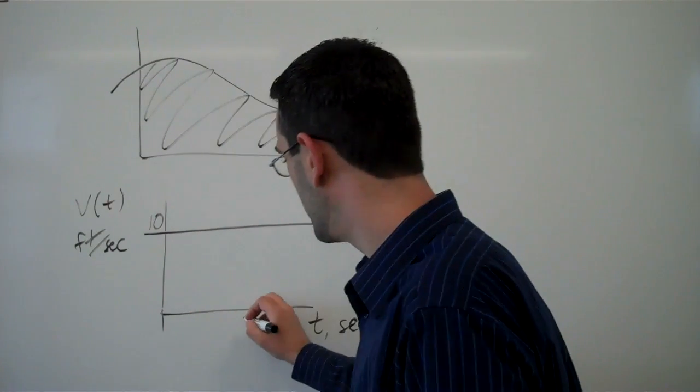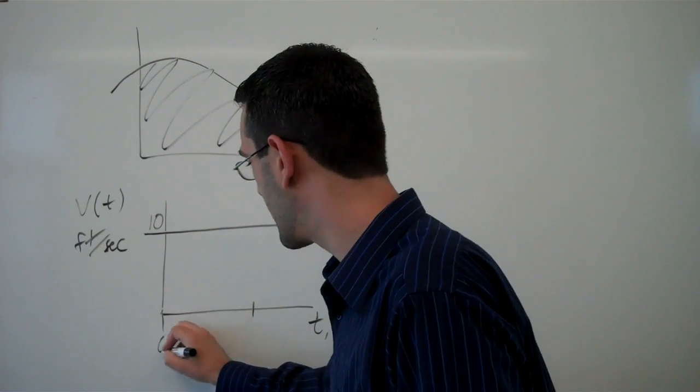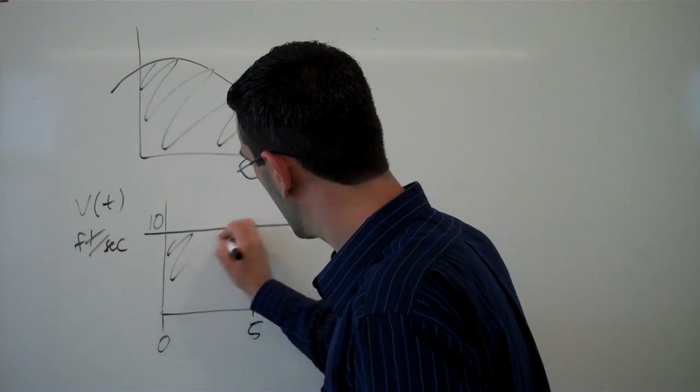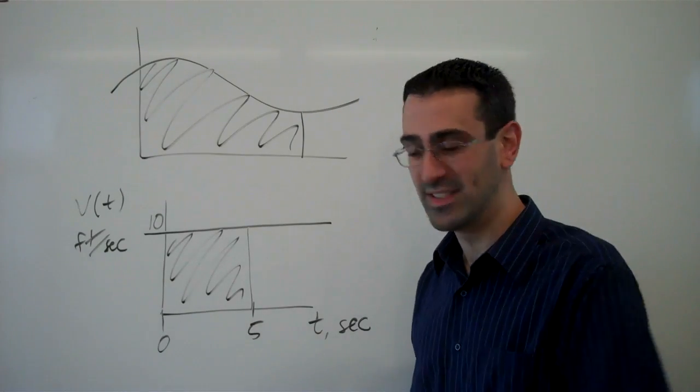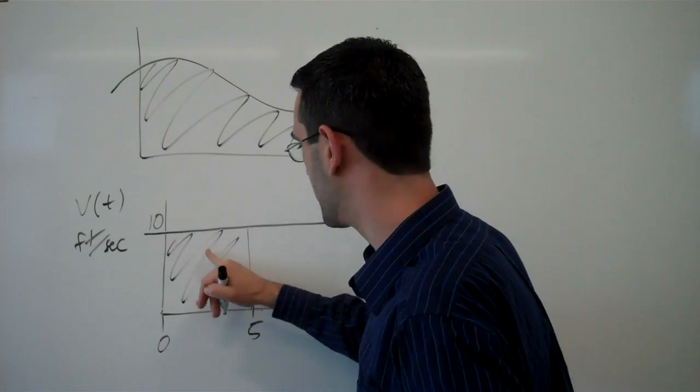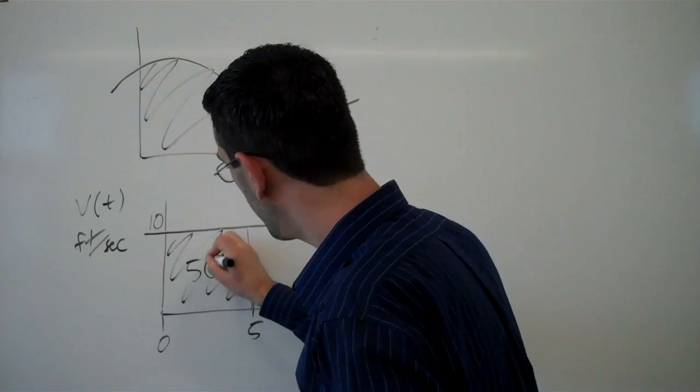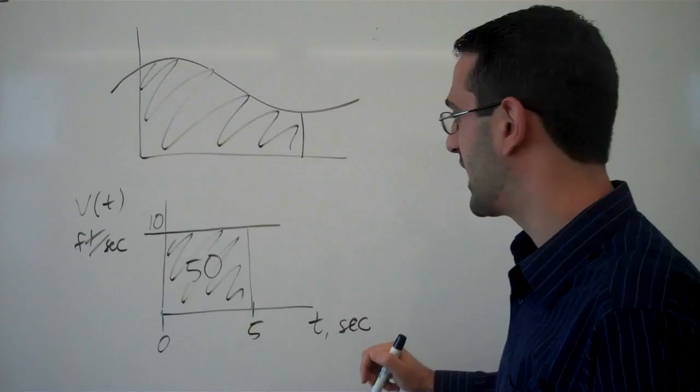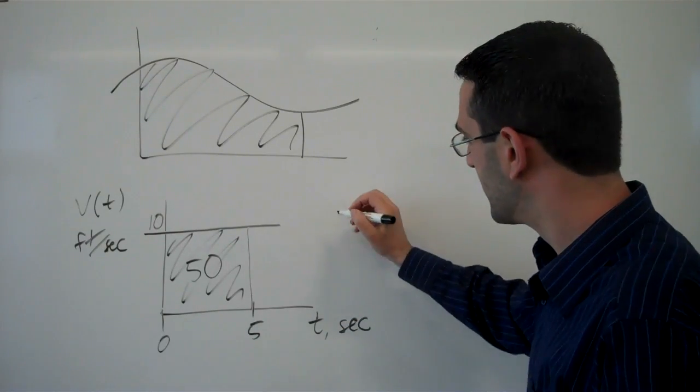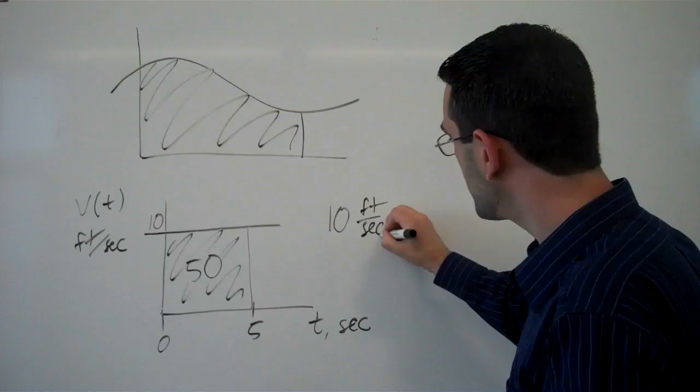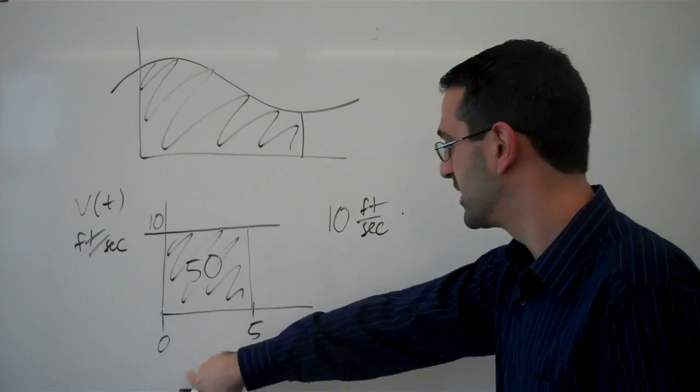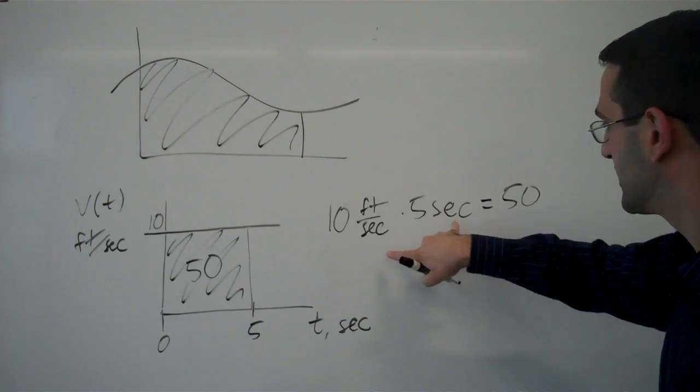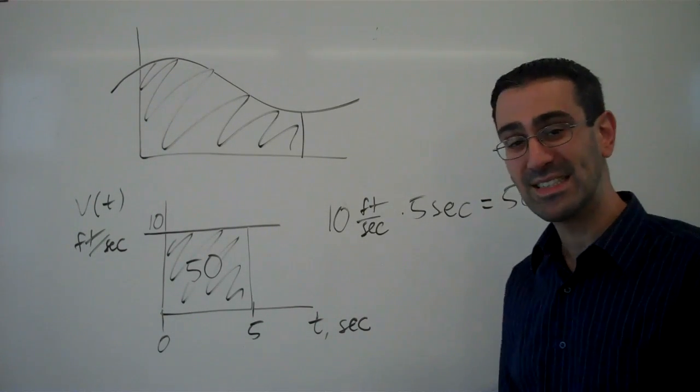So if I looked at the area under this curve from, let's say, 0 to 5, so during 5 seconds, the area is easy enough to find. It's a rectangle, height of 10, width of 5 gives us an area of 50. What does that area tell us? Well, let's think about how we found that. We took a height of 10 feet per second, and we multiplied it by a width of 5 seconds. The product of those two things, then, is, seconds cancel, 50 feet, a distance.